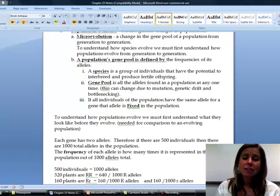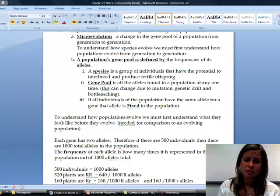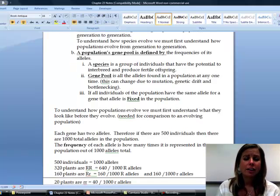And then the last part, we have 20 individuals that are little R, little R. So how many little R alleles are in that population? We would say 40, right? Because we've got 20 of one little R and 20 of another little R. So that gives us 40.